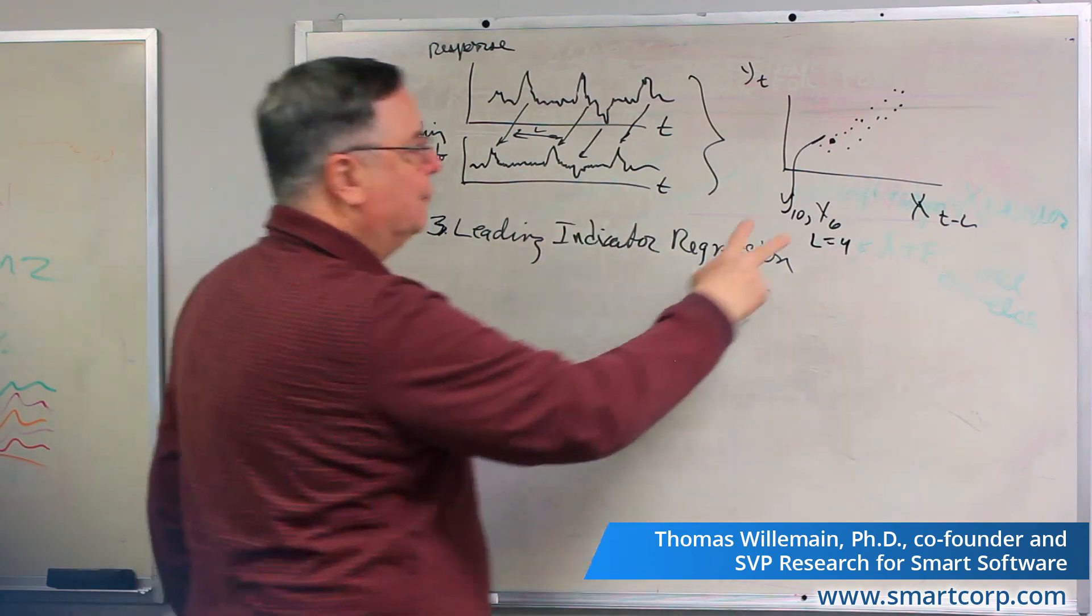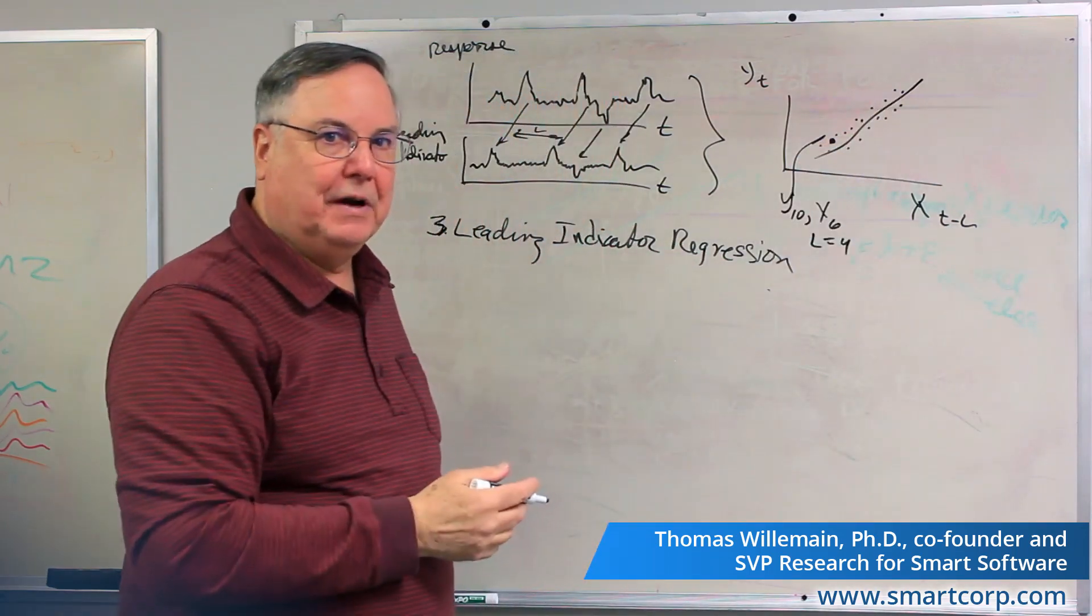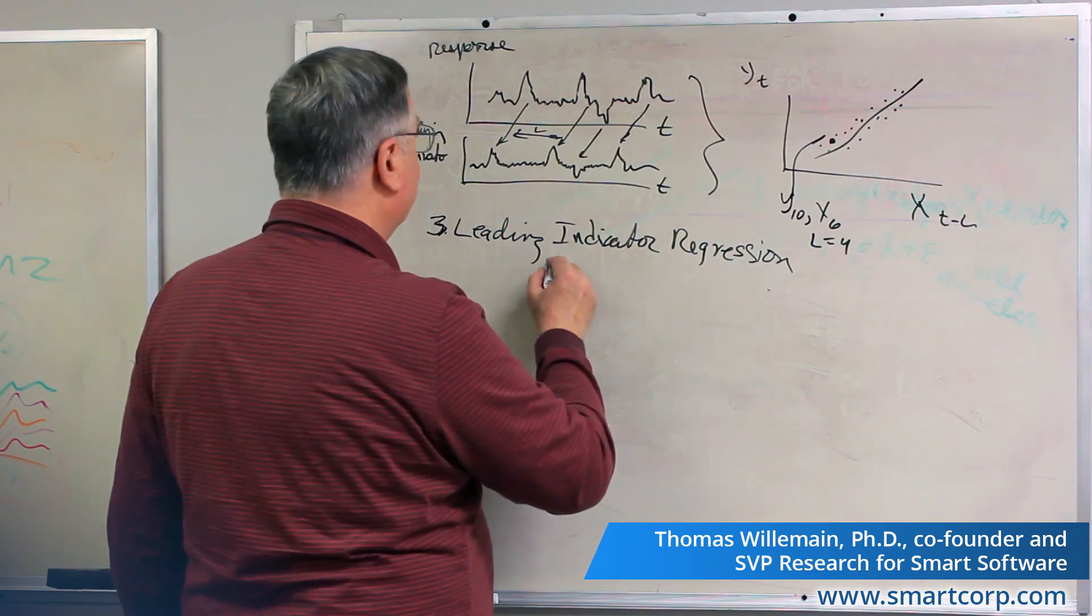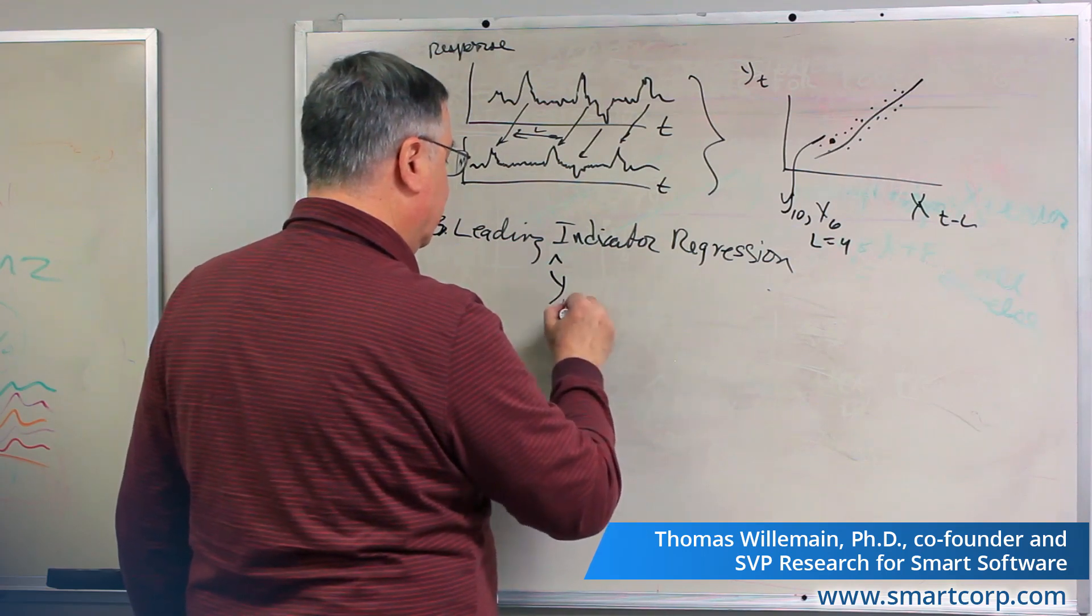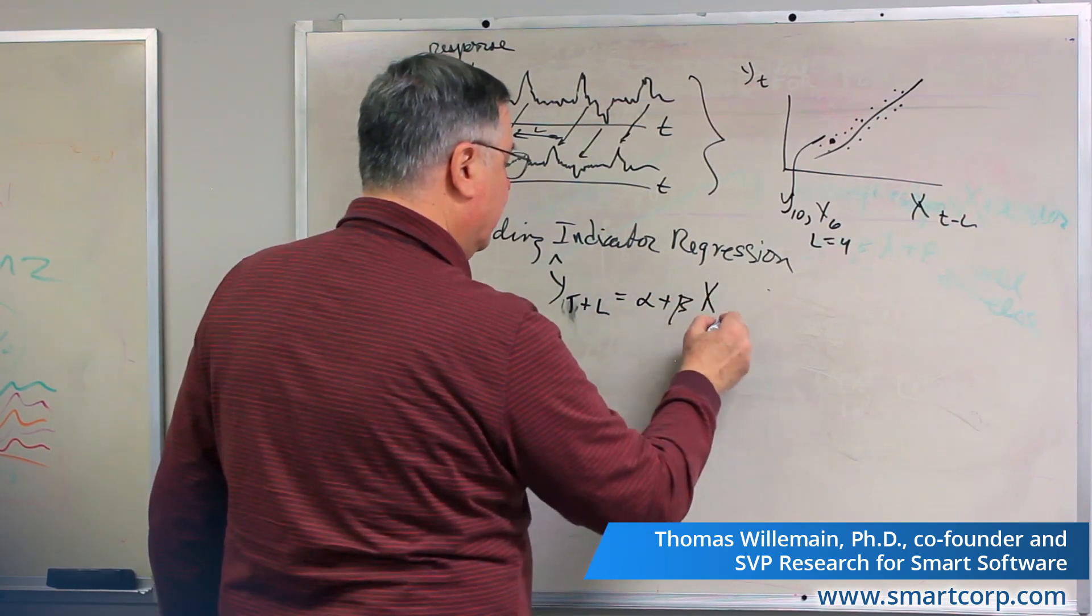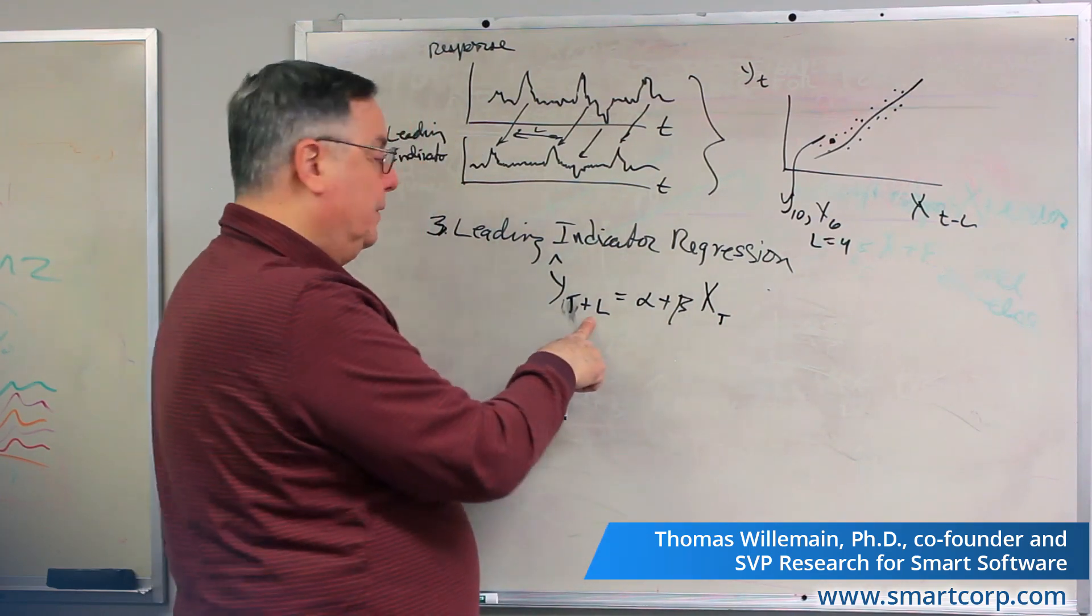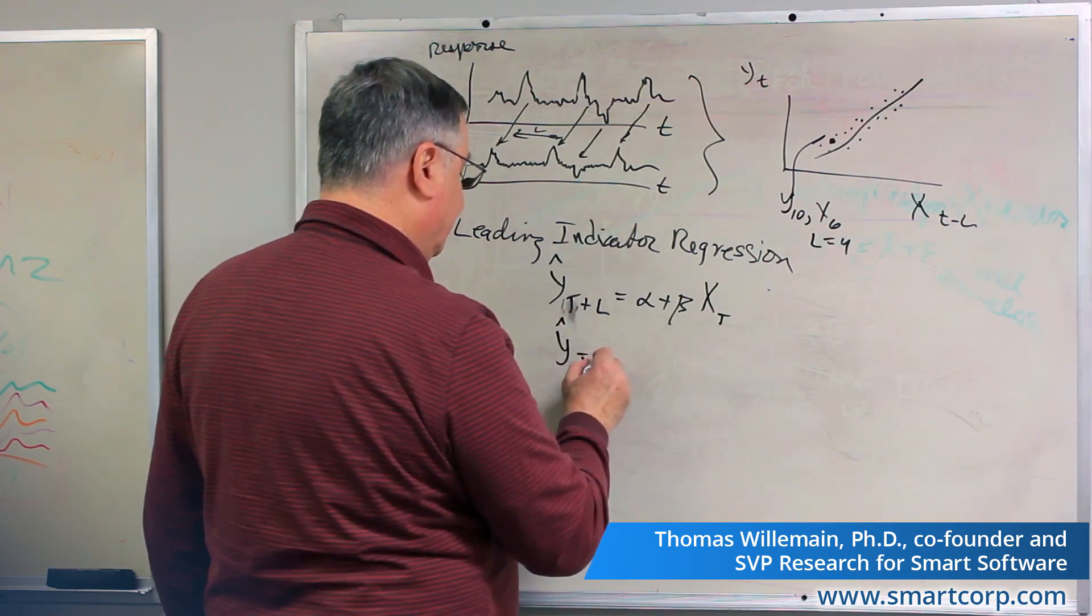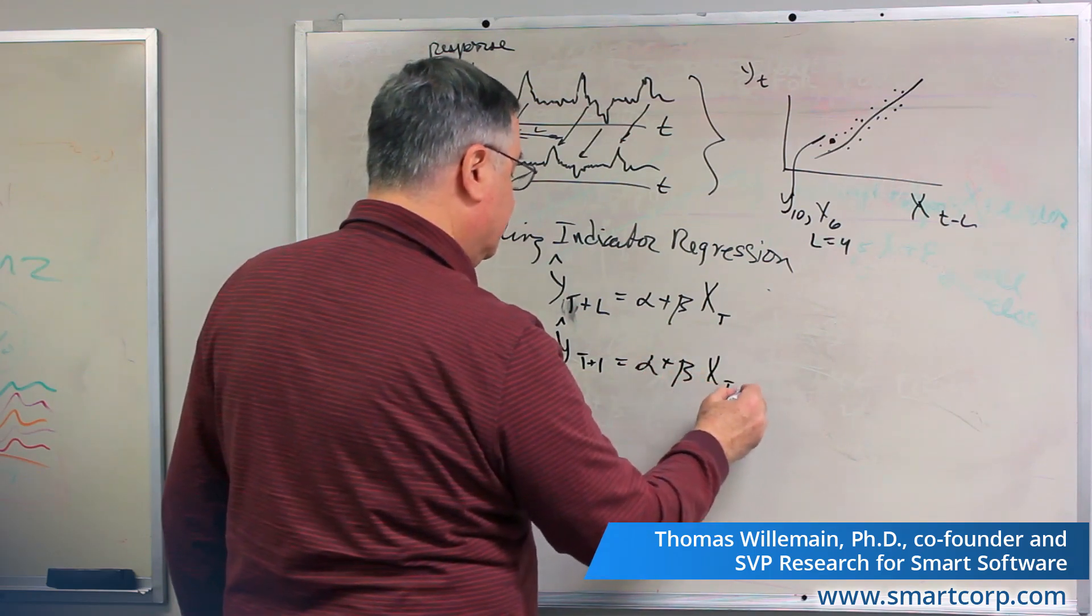But that's the only difference. Once you're in this situation, it's just a mechanical problem of finding the regression line that summarizes that data relationship. And you will have a forecast of Y at a future time, let's say T is now plus L, is alpha plus beta times X at time T. So this is known. And it'll predict L periods ahead.